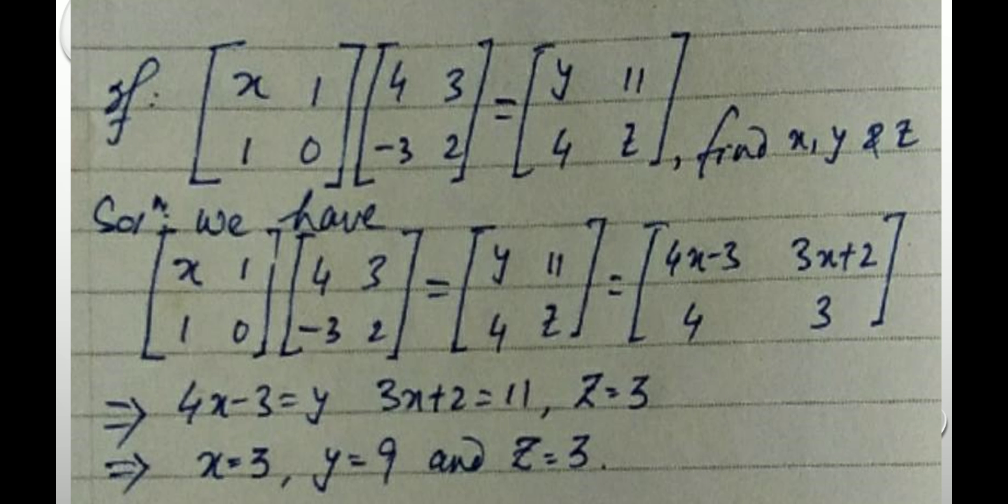We have x, 1, 1, 0 to be multiplied with 4, 3, minus 3, 2. That is equal to y, 11, 4, z. After multiplying we get 4x minus 3, 3x plus 2, 4 and 3. Since the two matrices are equal, making the corresponding elements equal, we get 4x minus 3 equal to y, 3x plus 2 equal to 11, z equal to 3. It implies x equal to 3, y equal to 9, and z equal to 3.